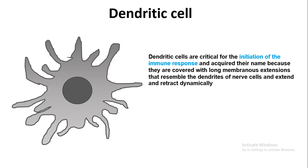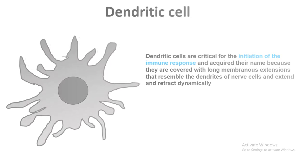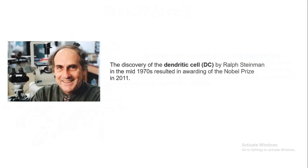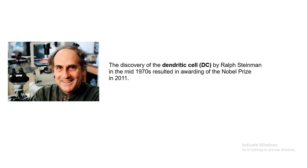Their name is dendritic cell because of their long branches, which are very similar to the dendrites of a neuron. That's why their name is dendritic cell. Dendritic cells were discovered by Ralph Steinman around the 1970s, and for that he received the Nobel Prize in 2011.